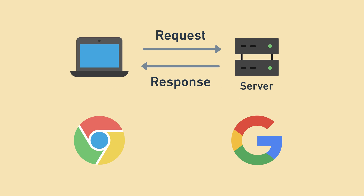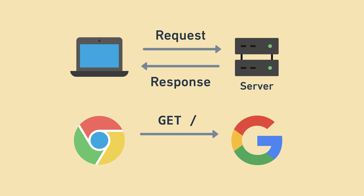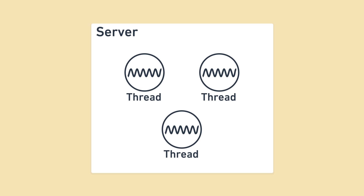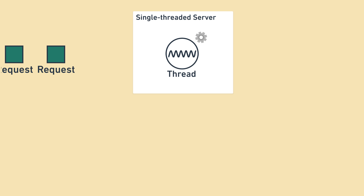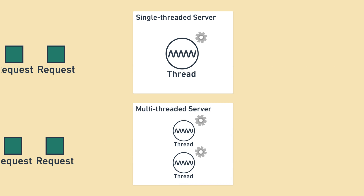For example, when you visit google.com, you send an HTTP request to a Google server, which computes the HTML response that you should see and sends it back to you. Then your browser displays the HTML on your screen as a website. Inside a server, one or more threads divide up the work between them. A thread can be thought of as a single worker that does work. A single-threaded server has one worker handling requests, while a multi-threaded server might have multiple ones handling requests at the same time.